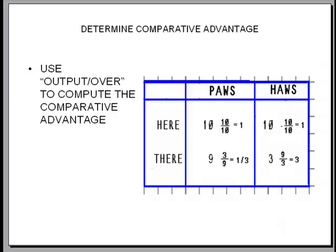Let's use the output over method to determine who has the comparative advantage. When I use the output over method here you can see that haws and paws trade one for one, but over there whenever I make a haw I give up three paws and whenever I make a paw I only give up one-third of a haw. Thus over there they have a comparative advantage in making paws.